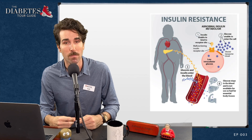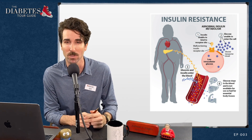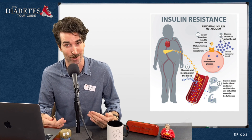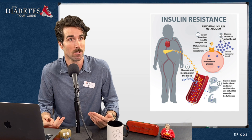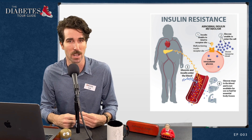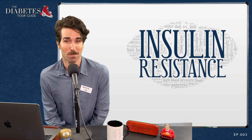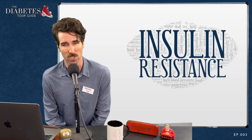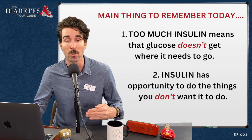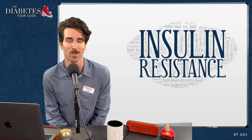Remember the other targets for insulin beyond glucose. Insulin also stores fat, so with more insulin doing that job, you store more fat. It also creates protein — you can create more protein in a hyperinsulinemia state. So it's almost like you get the negative side effects with too much insulin in this resistance state. We'll talk about side effects, symptoms, and disease conditions related to insulin resistance on future stops. The main thing to remember today is that too much insulin means glucose doesn't get where it needs to go, and insulin has opportunity to do the things you don't want it to do. But there is hope — there are treatments, both natural and prescription-based, to help with an insulin resistance state.